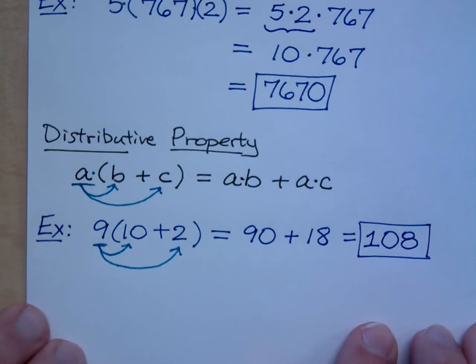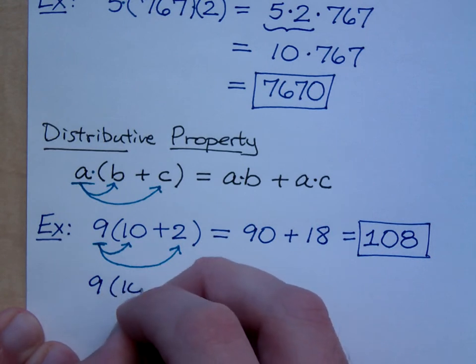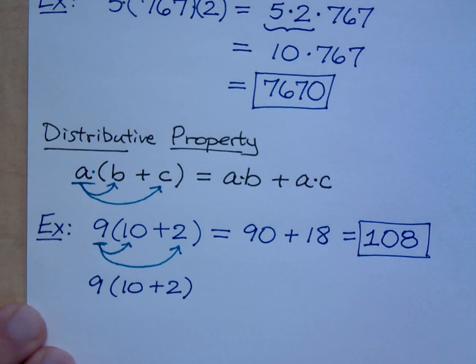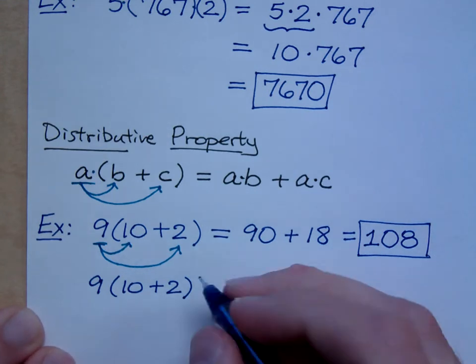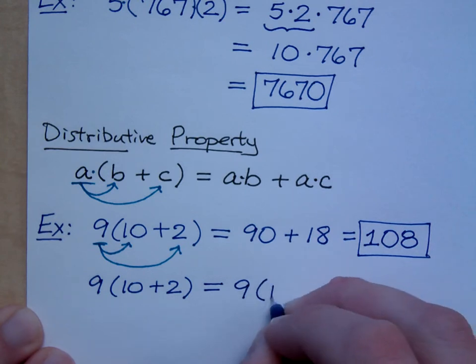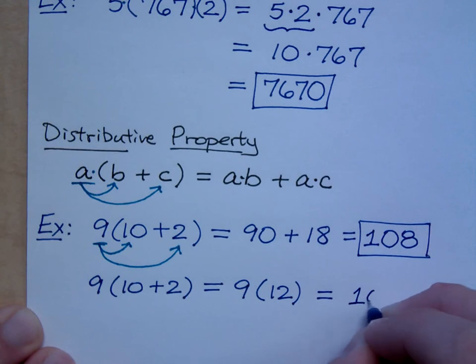Now, that is not the only way to do this problem. This is using that distributive property. The other way of doing this, parentheses create groups. These are called grouping symbols, and so it groups together 10 plus 2. So the order of operations that we'll be talking about later would say you can do 10 plus 2 first. And if you do 10 plus 2 first, what do you get? 12. You get your 12, and then 9 times 12 is, it's still 108.